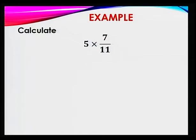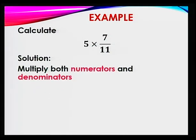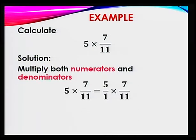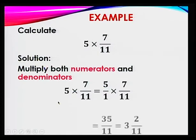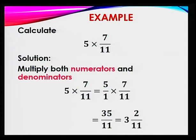Suppose you have to do 5 times 7 over 11. Remember, you need to multiply the numerators and the denominators. We can write 5 as 5 over 1. So, 5 over 1 times 7 over 11: multiply 5 times 7, which is 35, and 1 times 11 is 11. So, 35 over 11 — that's an improper fraction. Always, in case of an improper fraction, give your answer as a mixed number. So that will be 3 and 2 over 11.